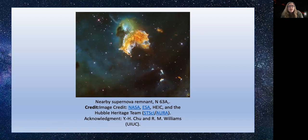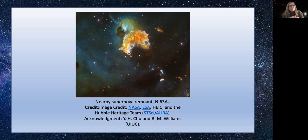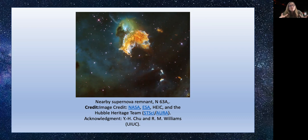This supernova remnant is quite different to the others because it's not a nice spherical shape. It's in a star-forming region in the Large Magellanic Cloud. The progenitor may have been a star about 50 times the mass of the sun, and the density around the star could have been very low because massive stars have big stellar winds that push gas away — so when the supernova explodes, there isn't much gas left for the shell to expand into. This region has dense clumps of gas that could have gone on to form stars, but the supernova explosion is disrupting and pushing them around so they won't form stars anymore.